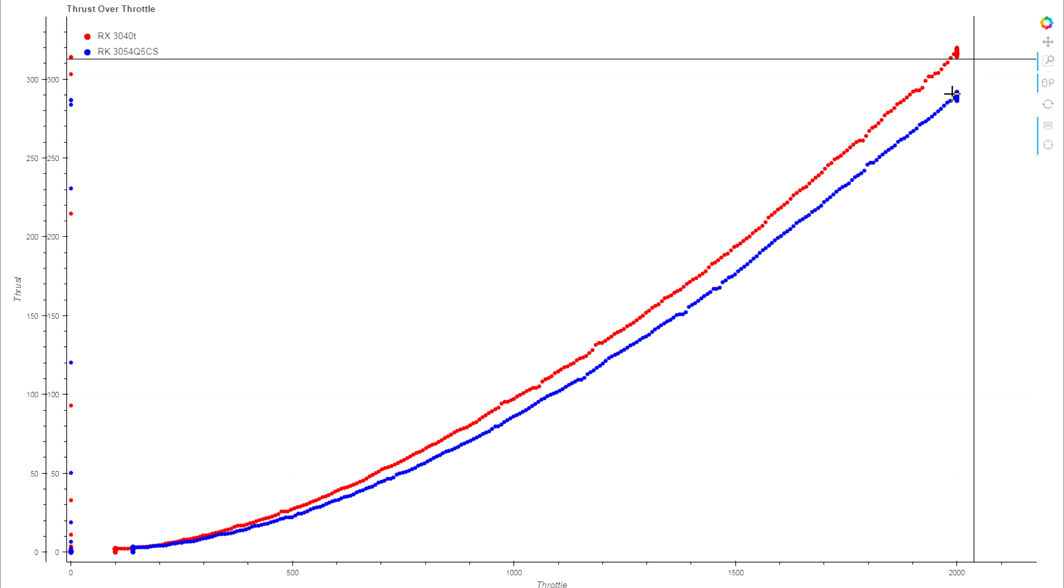We have this gap in thrust through the entire throttle range all the way down to the low end. Here at about half throttle we're looking at 86 to 97, so it's about an 11 gram difference down there, and then we have 88 to 115 at the top end there, 25-30 grams of thrust or so.